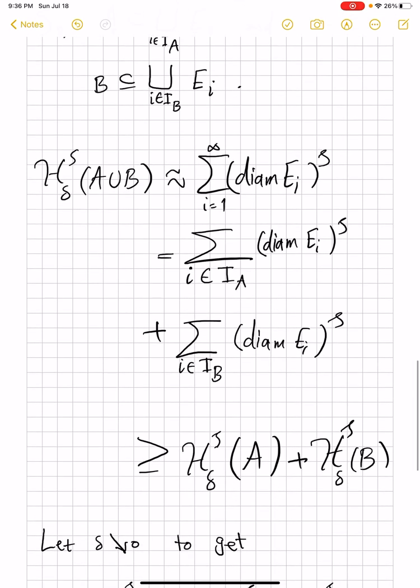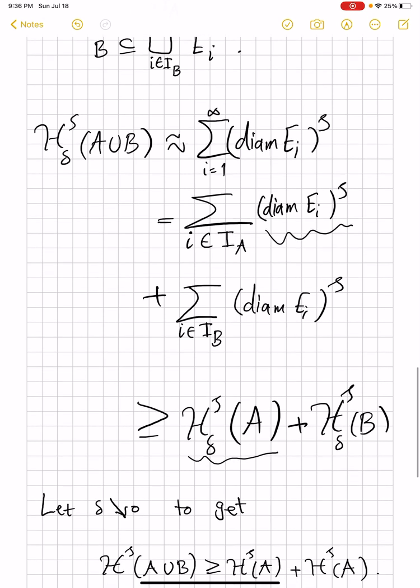And now because these E_i's form a δ-covering of A, that summation is an upper bound for this. Remember that the latter is the infimum of such summations. And the same goes with H^s_δ of B. So what we ended up proving is that H^s_δ of A union B is bigger than or equal to H^s_δ of A plus H^s_δ of B.